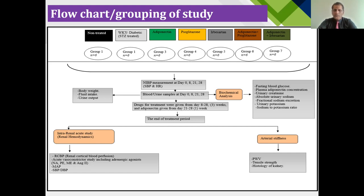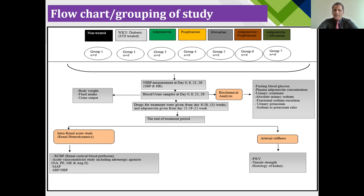From the acute renal study, when the treatment protocols were finished, we performed acute renal surgery for all the experimental animals. During that, renal cortical blood perfusion was measured with an acute vasoconstriction study, including adrenergic agonists: noradrenaline, phenylephrine, methoxamine, and NQ10C2. MAP — mean arterial blood pressure — systolic blood pressure, and diastolic blood pressure were also measured during the acute renal study. Arterial stiffness was also measured, but this is not part of the study presented here.